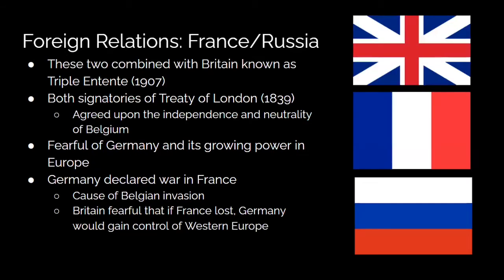Regarding France and Russia: these two countries, along with Great Britain, were known as the Triple Entente, officially formed in 1907. Both were also signatories of the Treaty of London in 1839, agreeing upon the independence and neutrality of Belgium. They were all fearful of Germany and its growing power in Europe. Germany had declared war on France, which was the cause of the Belgian invasion. Britain was fearful that if France lost a war against Germany, Germany would gain control of France and consequently all of Western Europe — and Britain was not about to let that happen.